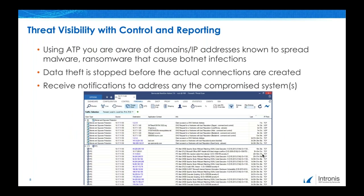The Barracuda Next Gen Firewall also acts as the linchpin for an organization's network traffic by using ATP and being aware of domains and addresses known to spread malware, ransomware, and that cause botnet infection. For detecting network traffic from inside the network to a botnet's command and control service, such as call home, data steps are stopped before the actual connections are created. Additionally, administrators are notified accordingly to take care of compromised systems. Infected users can be automatically quarantined to prevent the malware from spreading within the network or creating encrypted communications back to the outside.